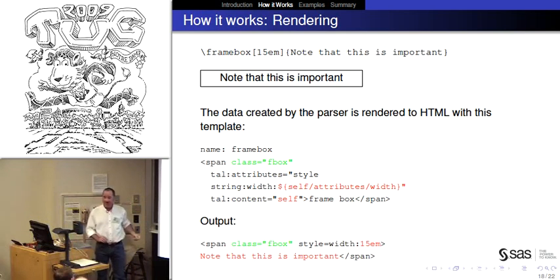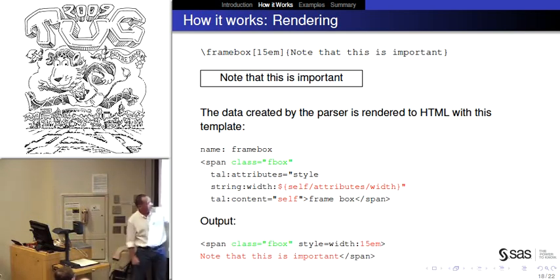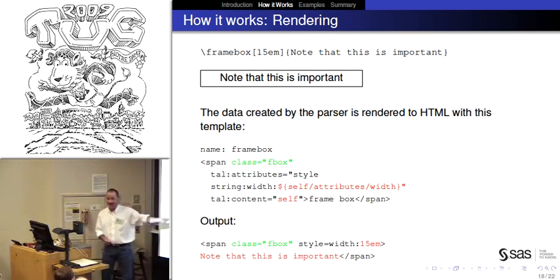So the output, can you see that at the bottom? It's span class equals fbox. So it just took my verbatim boilerplate there. Style equals width colon 15em. I wrote this. It didn't generate because it would have had quotes around it like it should. And then note that this is important is the text. So we went from the LaTeX source through the template and then got our output. So we just continue to do that all the way through the document.